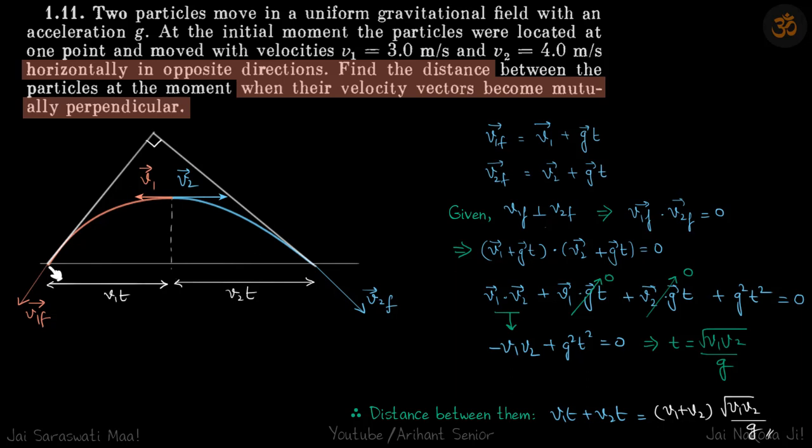Our approach will be to write both the velocities in their vector form and then take their dot product to be zero. For the first particle, its final velocity is initial plus gt, everything is in vector form. Similarly for the second particle, final velocity is v2 vector plus g into t.